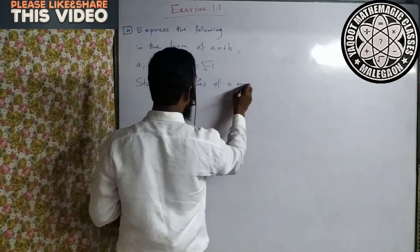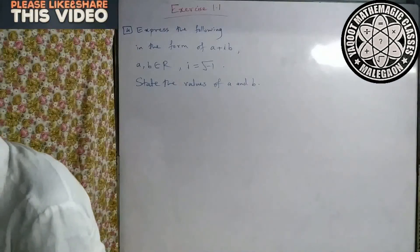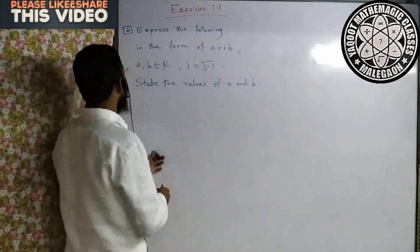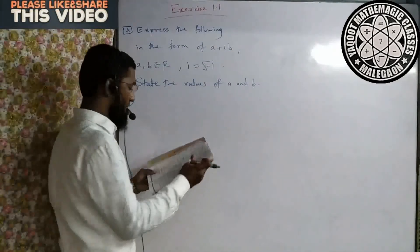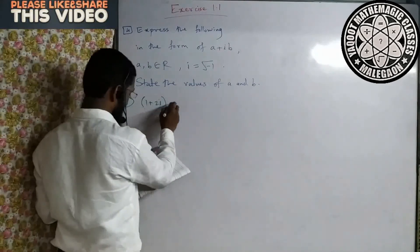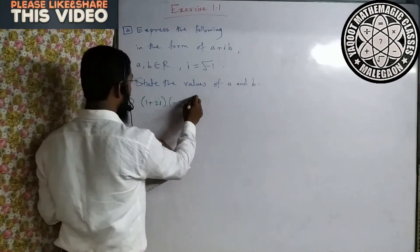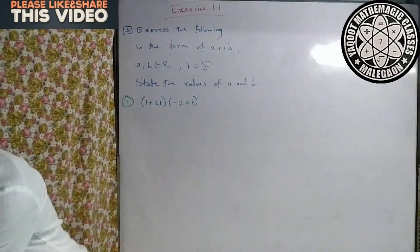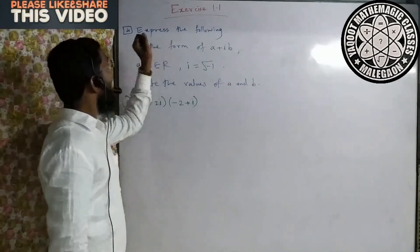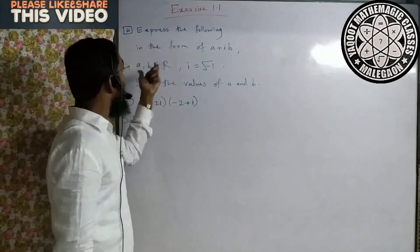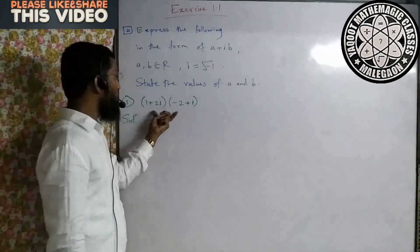a aur b ki value batani hai. Question number 1 mein aapka hai: (1 + 2i) multiplied by (−2 + i) — do complex numbers ka multiply. Solution: question camera — express the following in the form of a plus ib ke form mein express karna hai jo bhi question diya gaya hai.